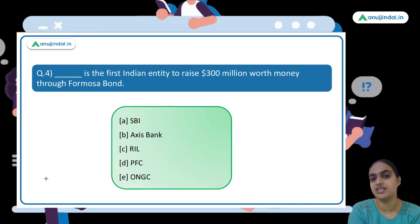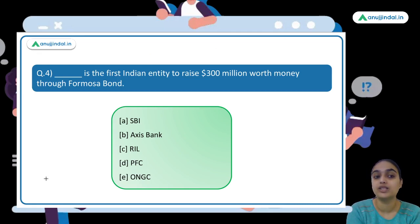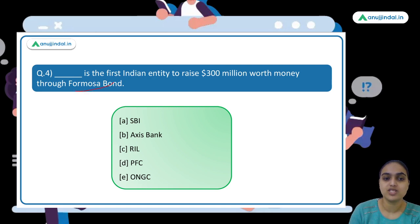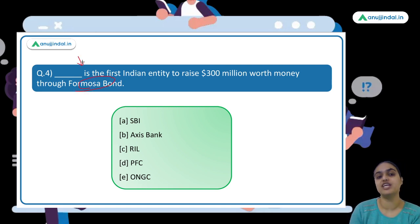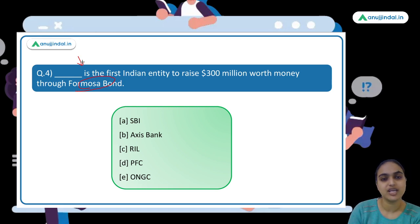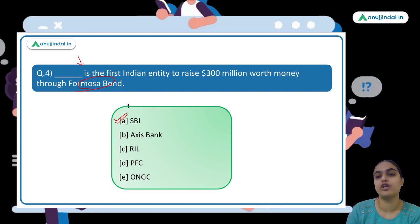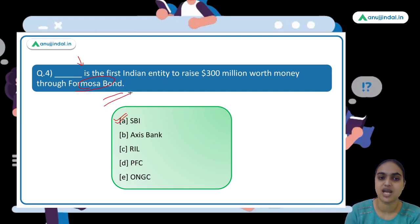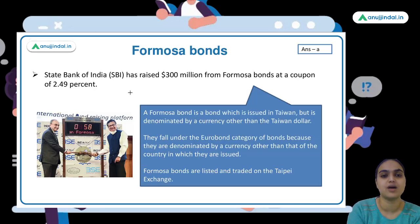The fourth question asks which Indian entity was the first to raise $300 million through the Formosa bond. The answer is option A — SBI (State Bank of India), which issued Formosa bonds to raise money at a 2.49% rate.